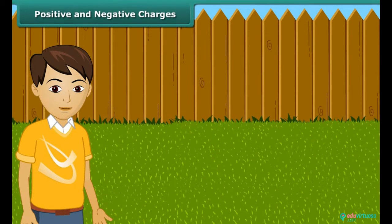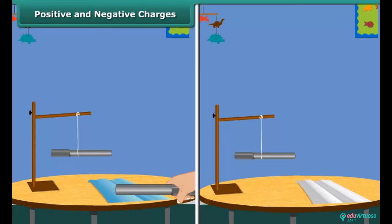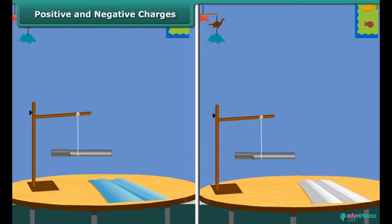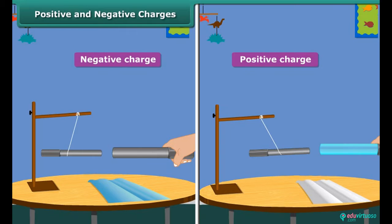The charges produced in the ebonite and the glass are different in nature. These two kinds of charges are called positive and negative charges.